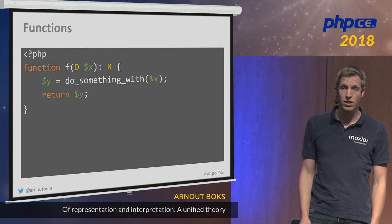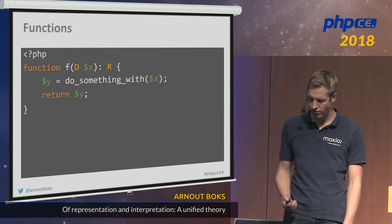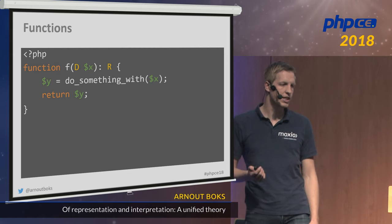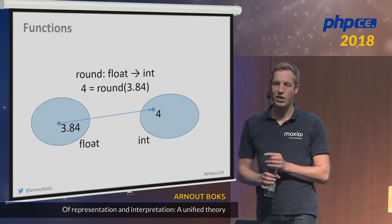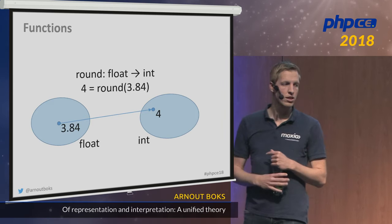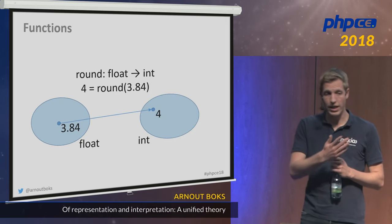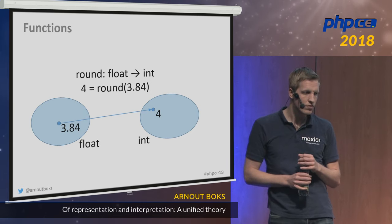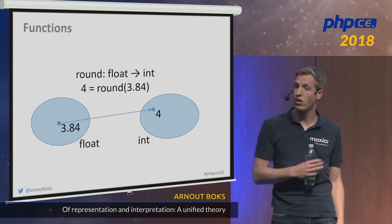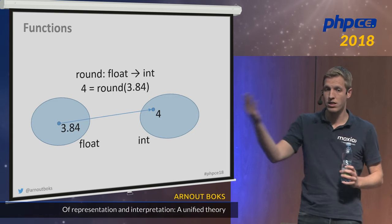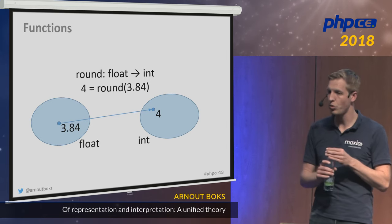Let's look at a more concrete example: a function that rounds numbers to an integer. Its domain is float and its output is an integer. Essentially, for every member of the domain it maps to a member of the range — so a function is also a kind of mapping between those two sets.